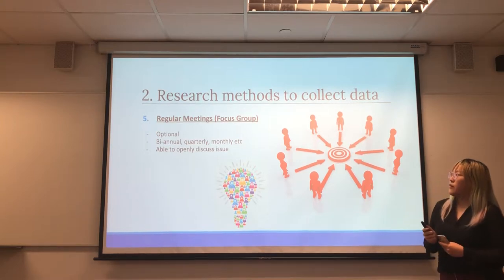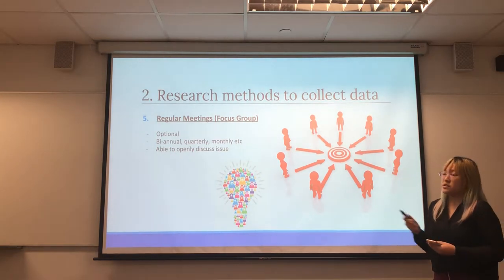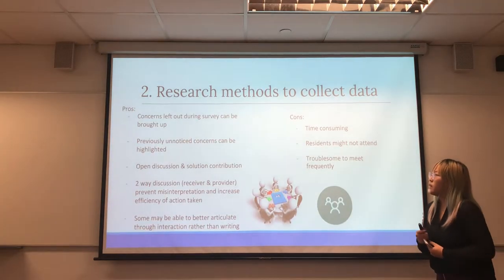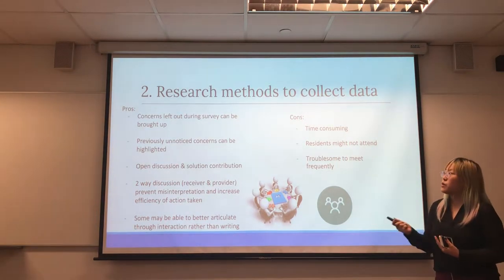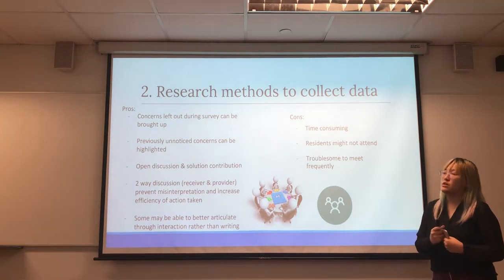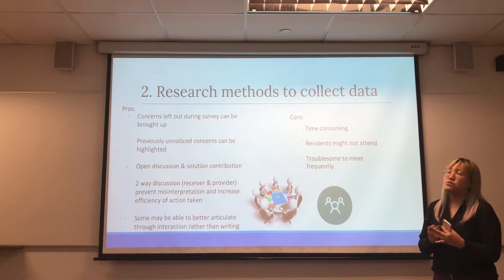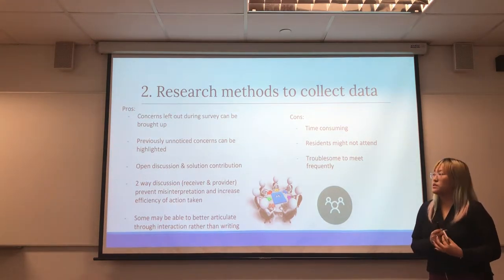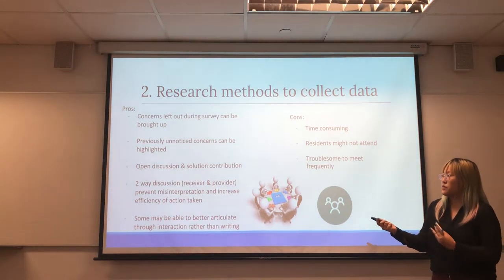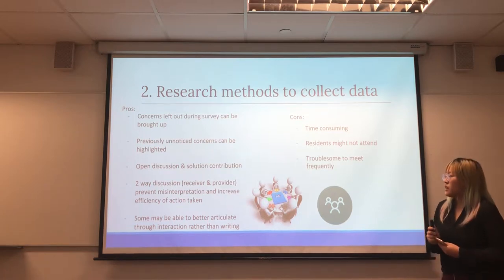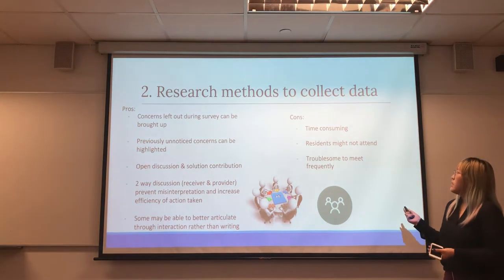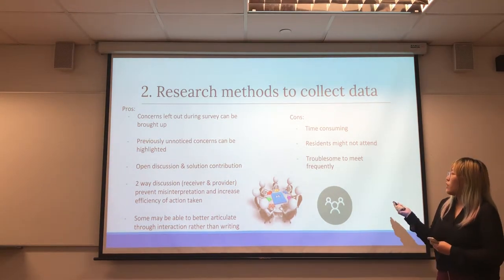The fifth method is to have regular meetings, in other words, a focus group. This focus group would be optional and held either biannually, quarterly, or monthly. Residents will be able to openly discuss issues or concerns. The advantage is that any concerns left out during the survey can be brought up, and previously unnoticed concerns may be highlighted with discussions on solutions. A two-way discussion between residents and management prevents misinterpretation of survey results and increases efficiency. Some people are also better able to articulate concerns through face-to-face interaction. The disadvantage is that it is very time-consuming and residents might not attend.